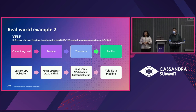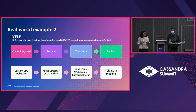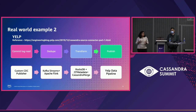Yelp has a similar example. They've used CDC as a solution to get data from multiple databases and publish it to the Yelp data pipeline. They've written a custom CDC publisher to get data from the commit log. They use intermediate Kafka streams and Apache Flink to stream and dedupe the data. Then they've used RocksDB column family metadata and a merge from the commit log to merge the data, transform it into an after image, and publish it into the Yelp data pipeline.